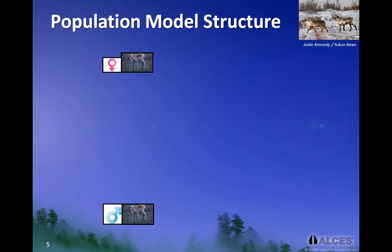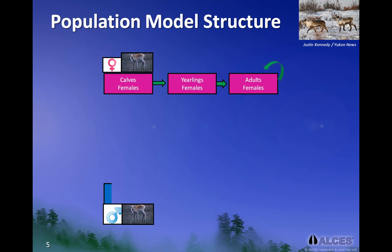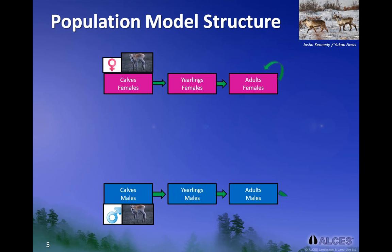Let's apply the concept of a stock and flow model to an animal population, using caribou as an example. We recognize that there are two sexes — female shown above and male shown below — and we define three age classes: calves, yearlings, and adults. Each age and sex of caribou in this model structure represents a stock, or unique group, within the population. The green arrows represent inflow rates from one stock to another.